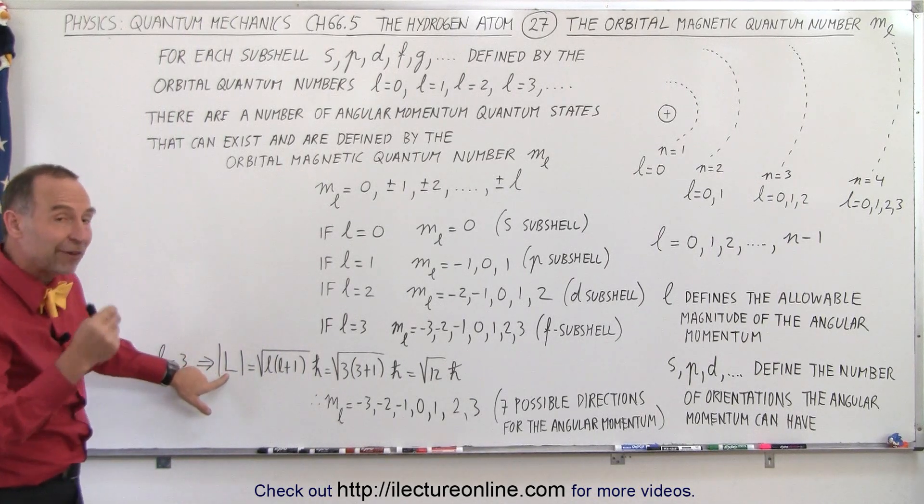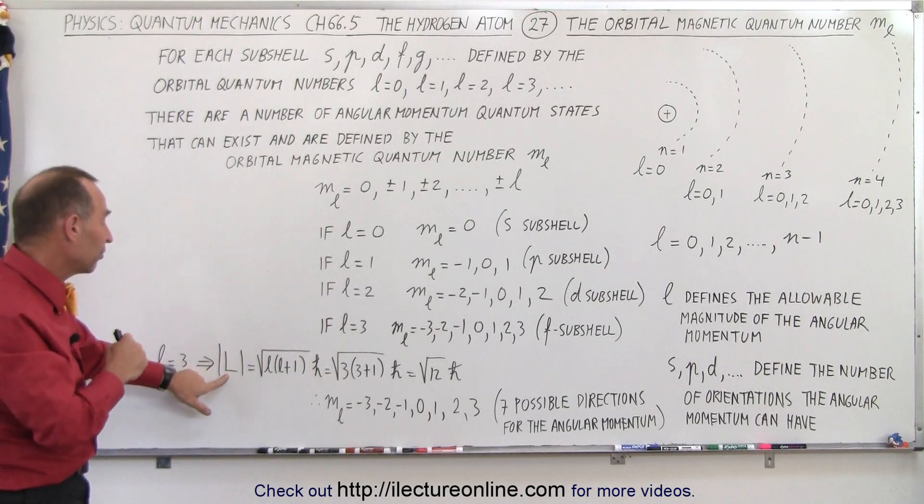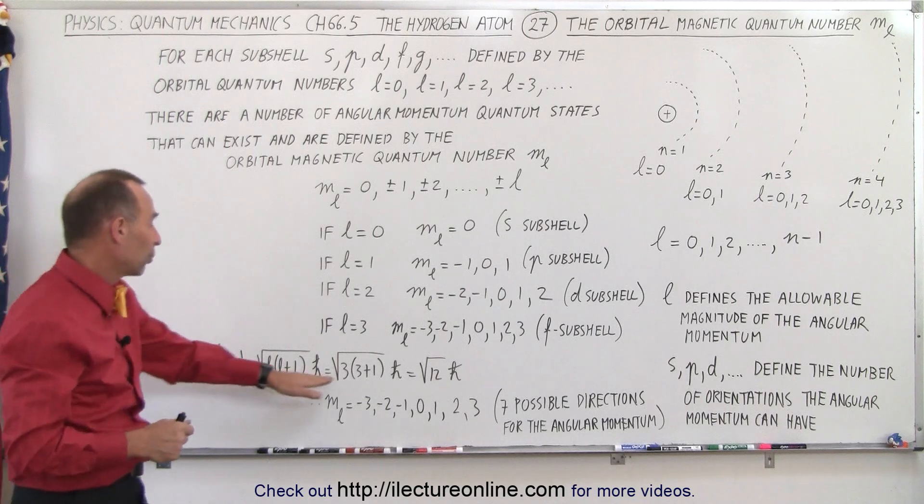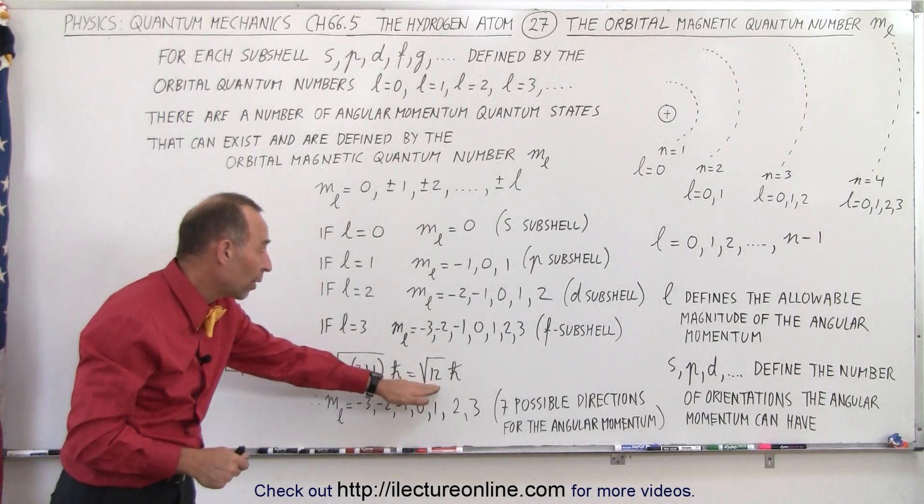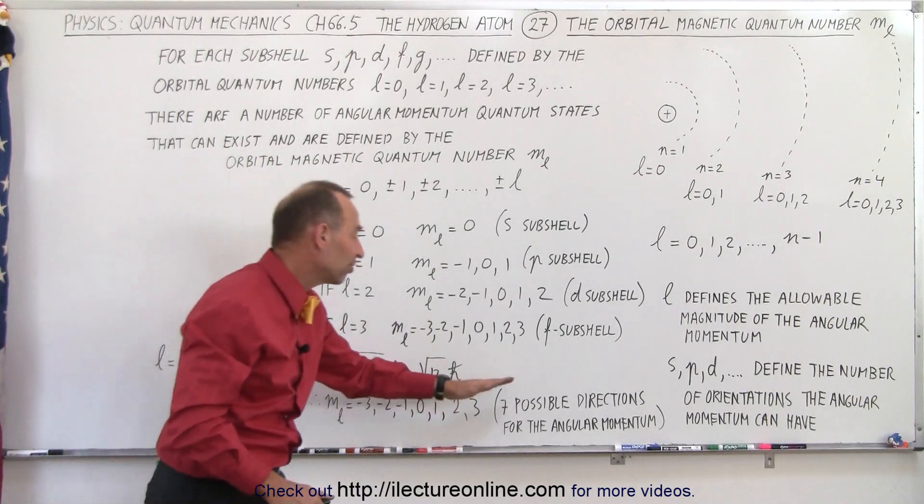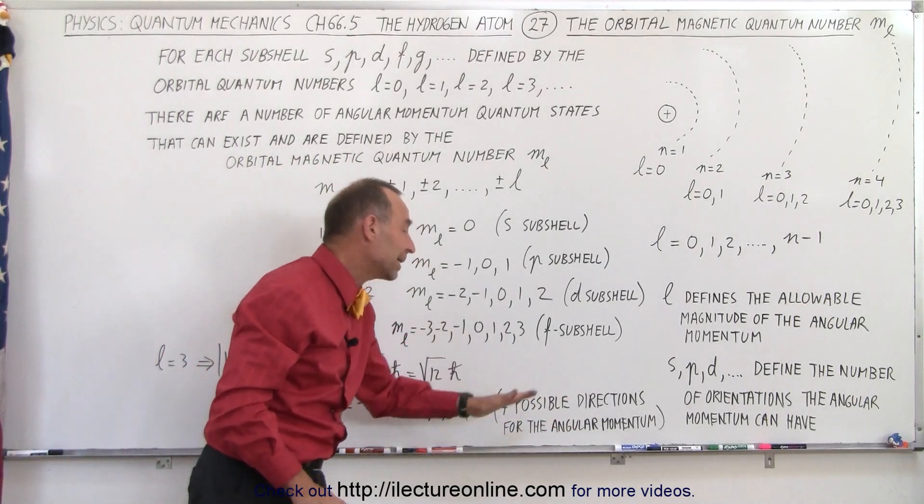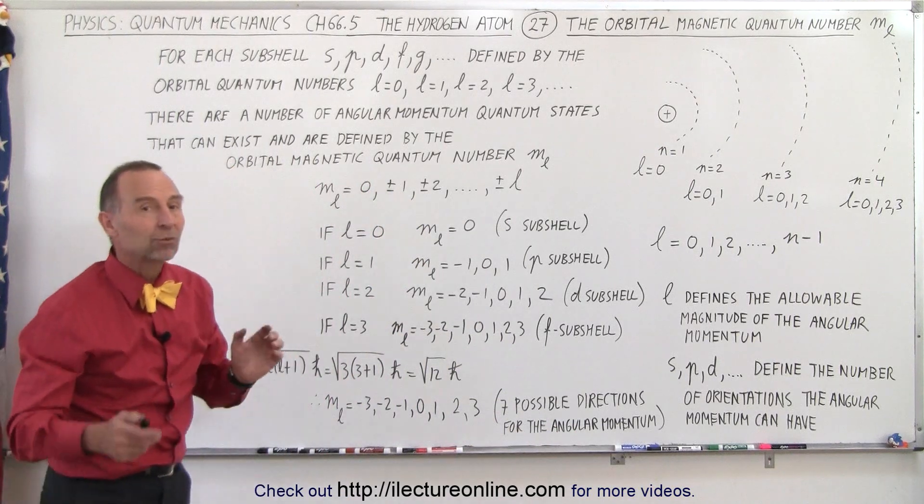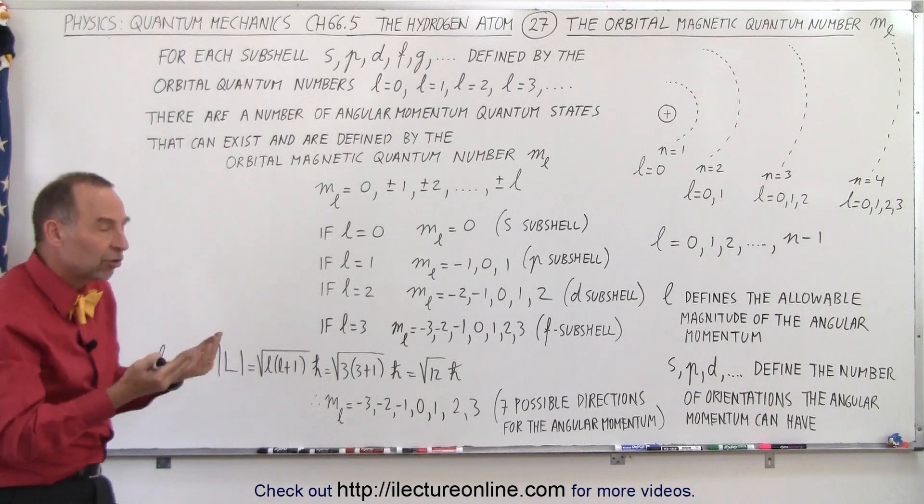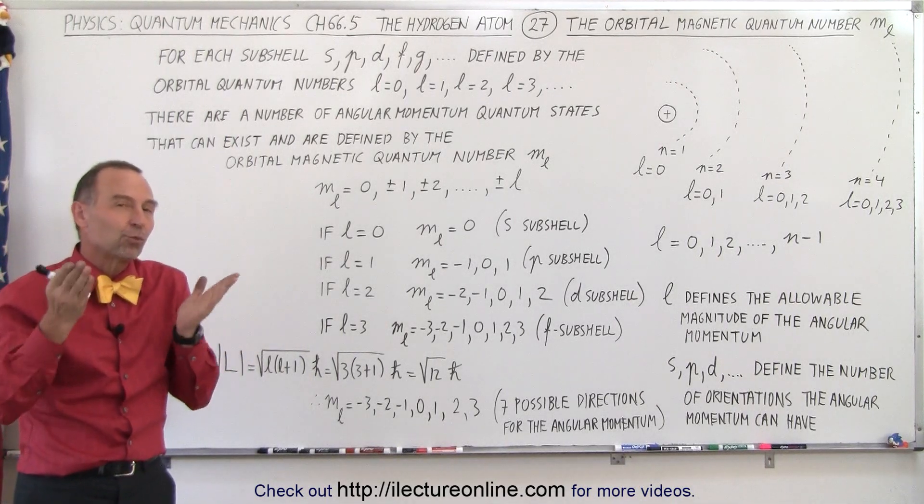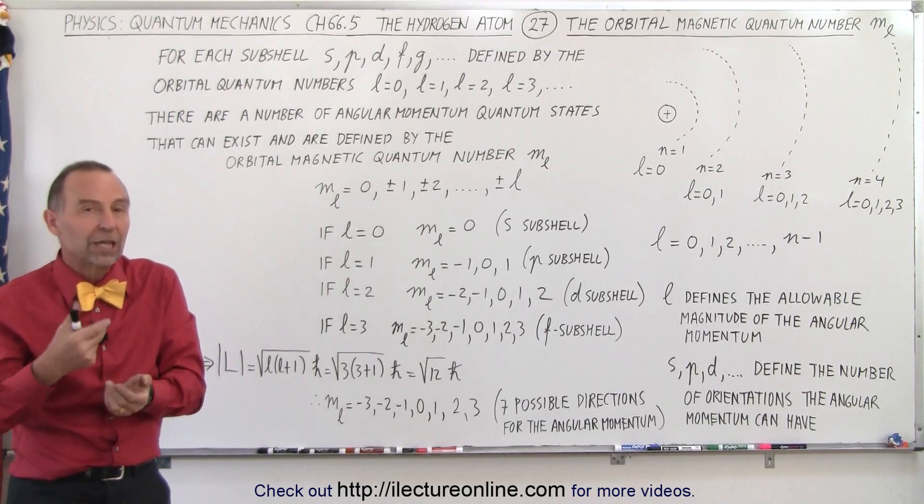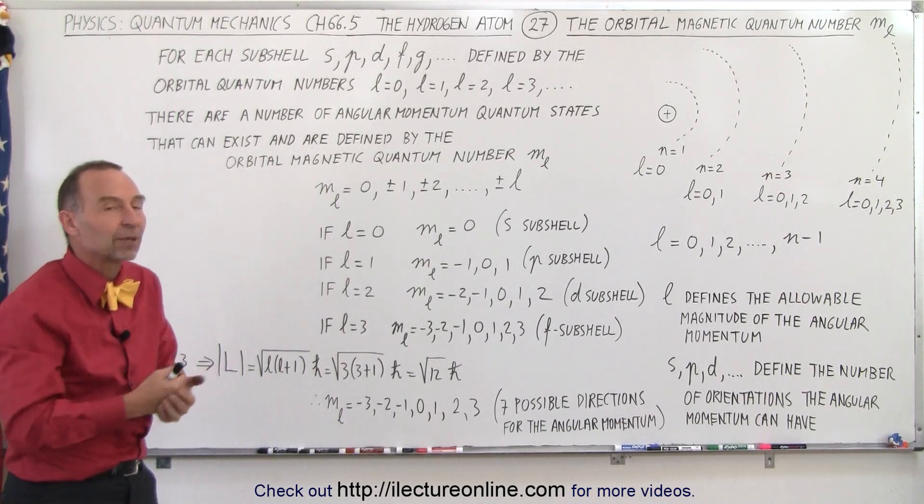When L equals 3, we can then define the magnitude of the angular momentum by the square root of L times L plus 1 times h-bar. So since L is 3, that will be equal to the square root of 12 times h-bar, which means we have these seven possible values, which means we have seven possible directions for the angular momentum. And that's what we mean by the orbital magnetic quantum number M sub L. It essentially defines the different directions the angular momentum can have, which therefore defines the different orbitals in which the electrons in the hydrogen atom can exist.